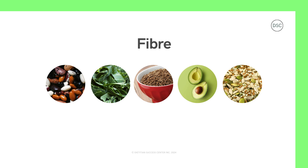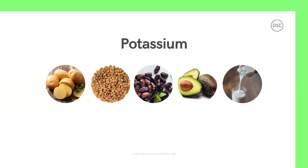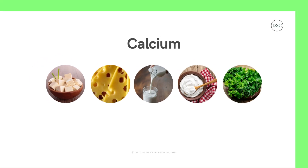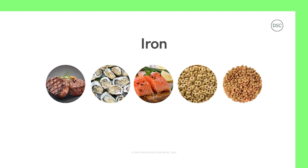Fiber helps to keep you fuller for longer and also helps to keep your digestive system working well. Potassium helps the body manage blood pressure and is important for nerve and muscle function. Calcium is necessary for healthy bones and teeth and is also important for muscle and heart health. Iron helps move oxygen around your body through the blood.